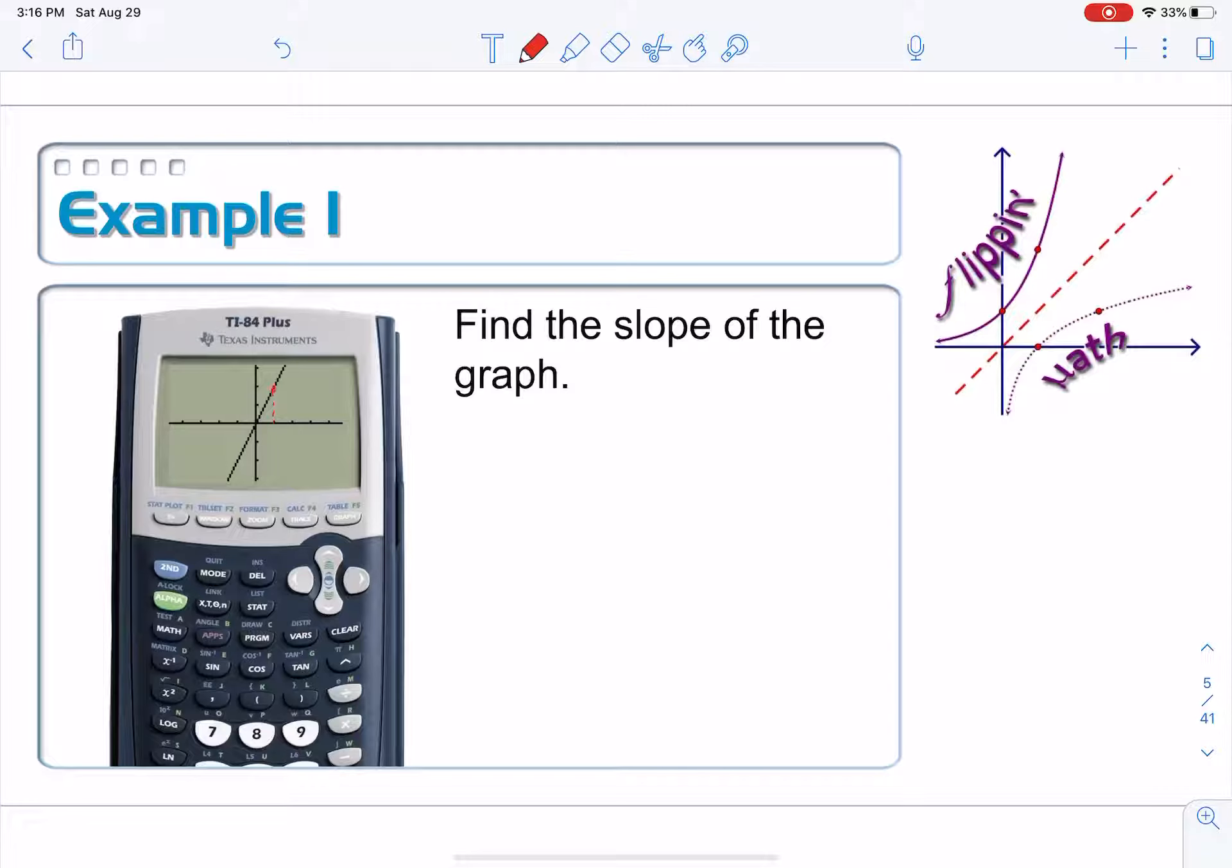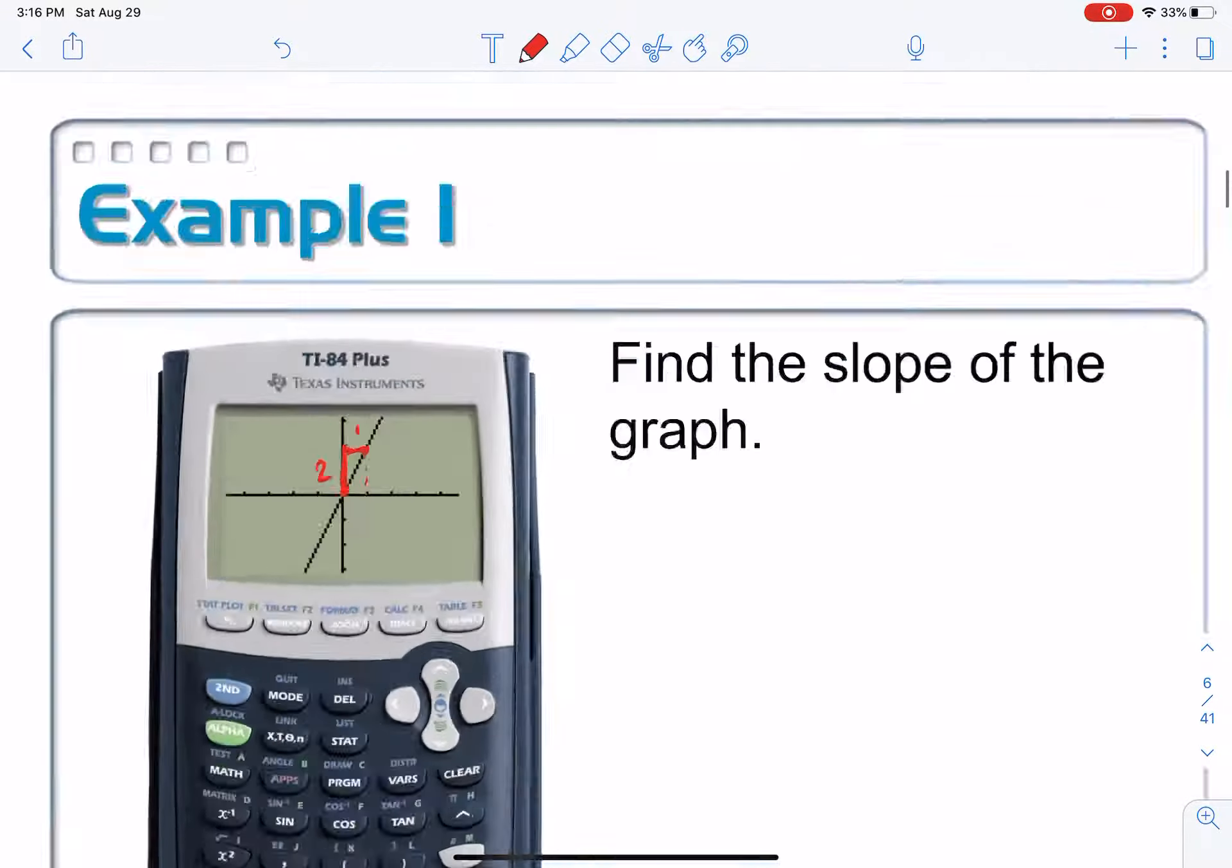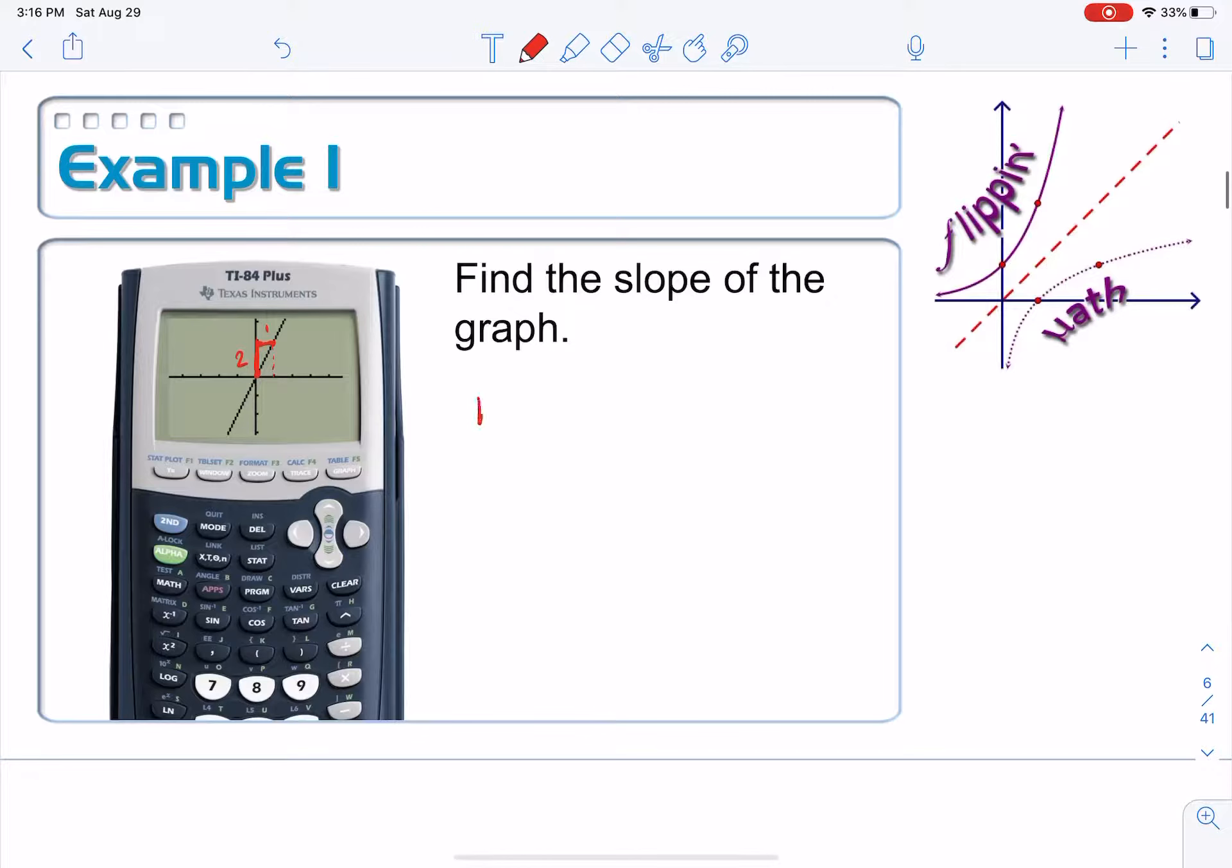It is the graph of a line. Okay, so it looks like if I come up here, whoops, where'd my pen go? It's right there and right here. That looks like it's two. This looks like it's one, right? So that means that the slope looks like it is approximately two.